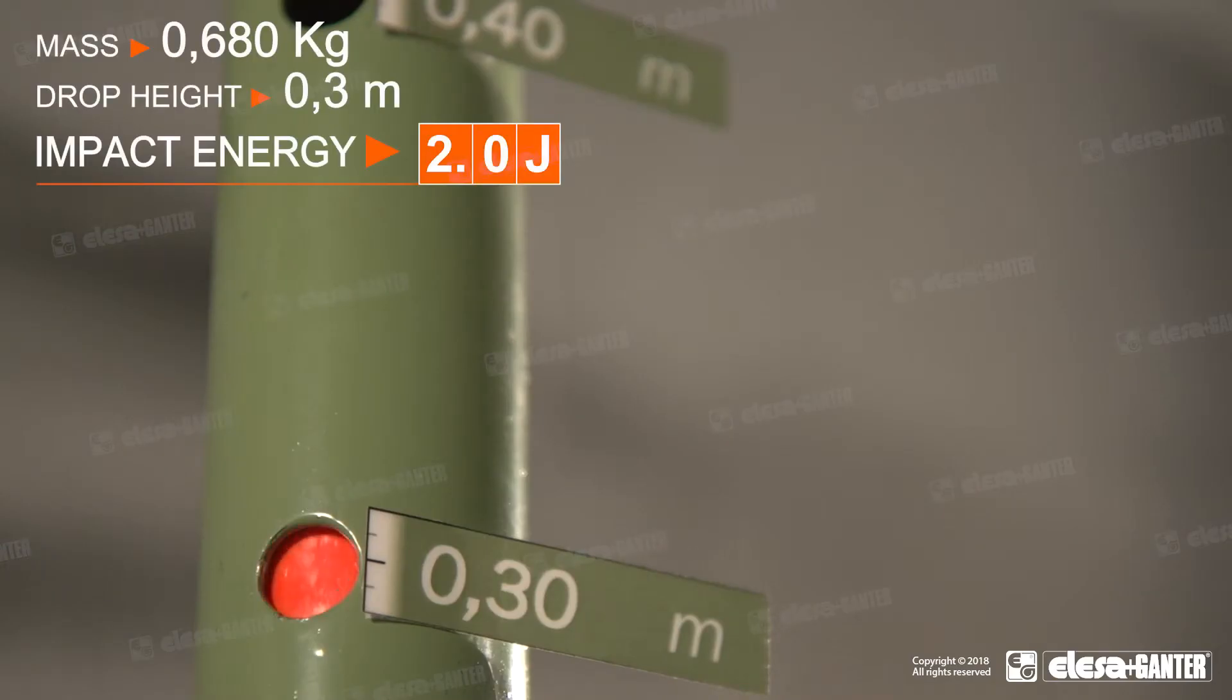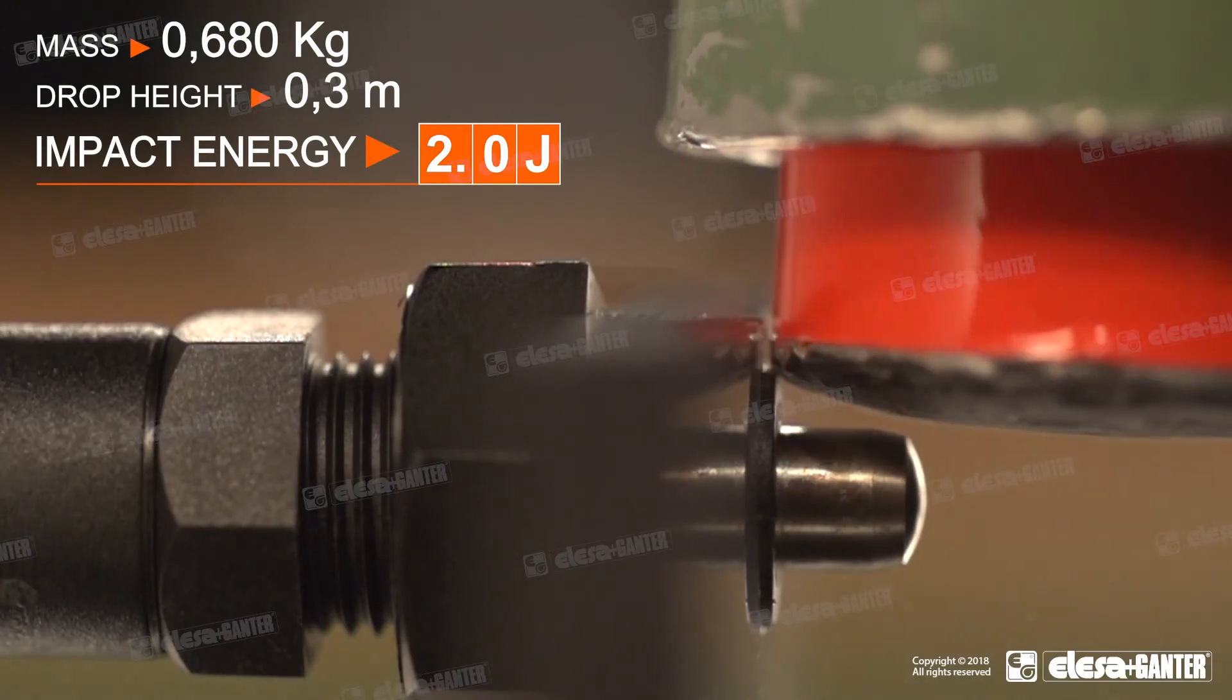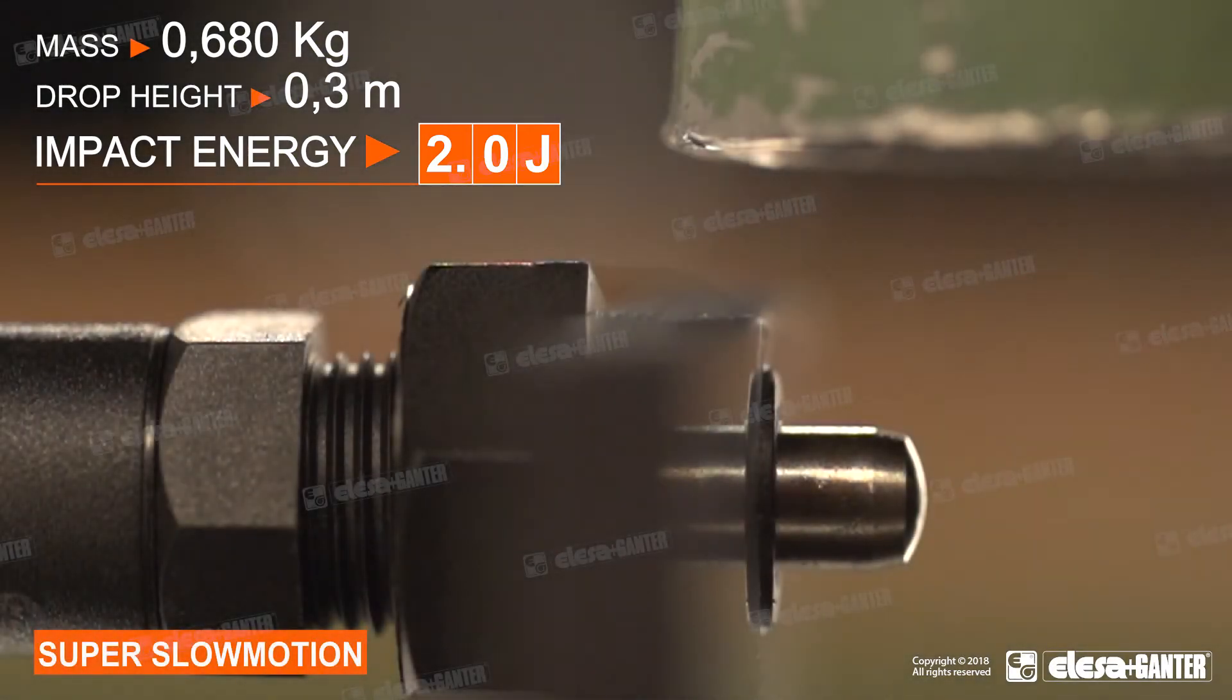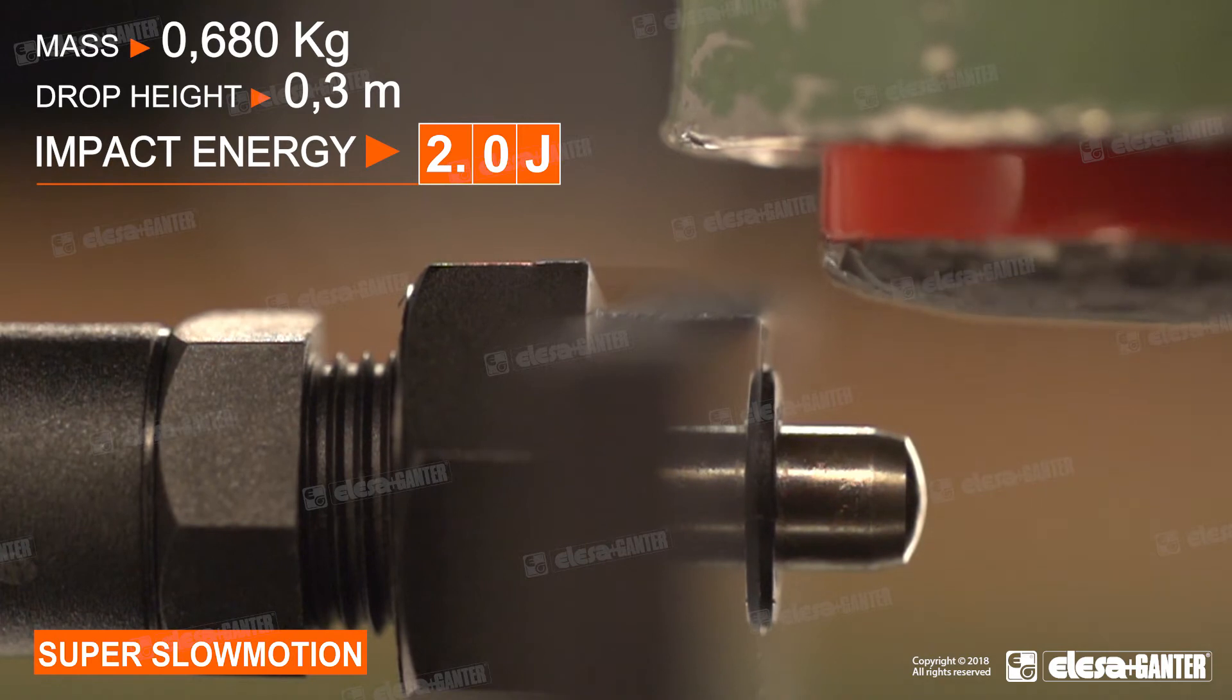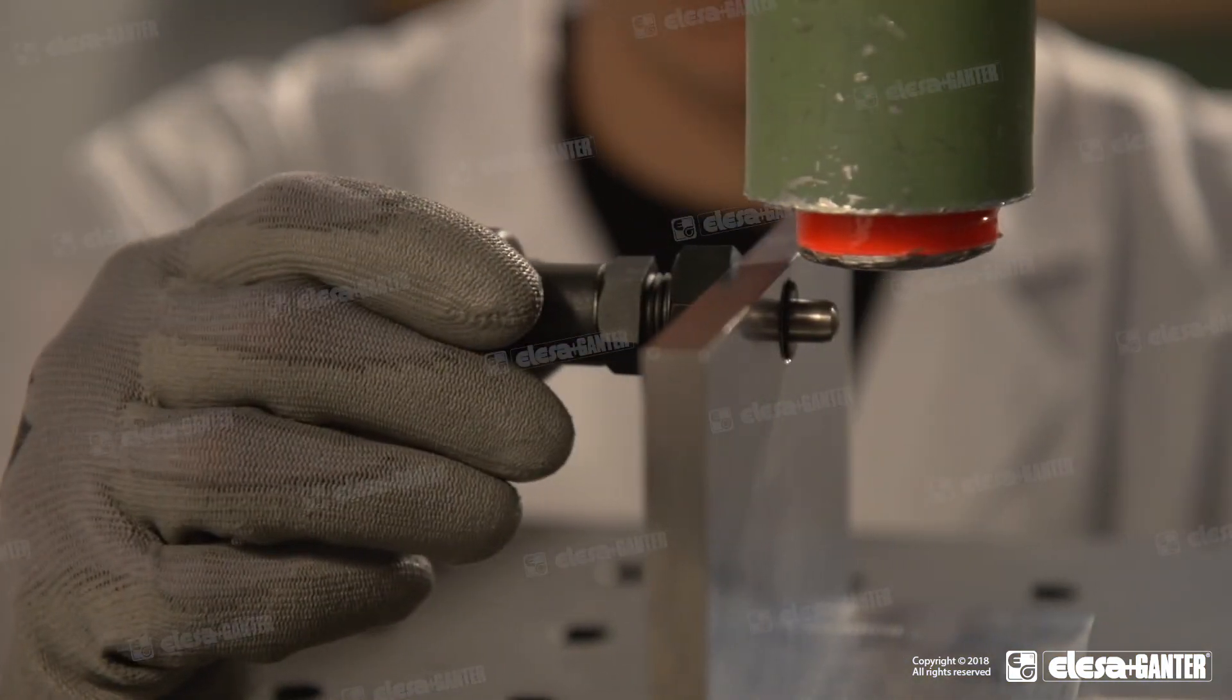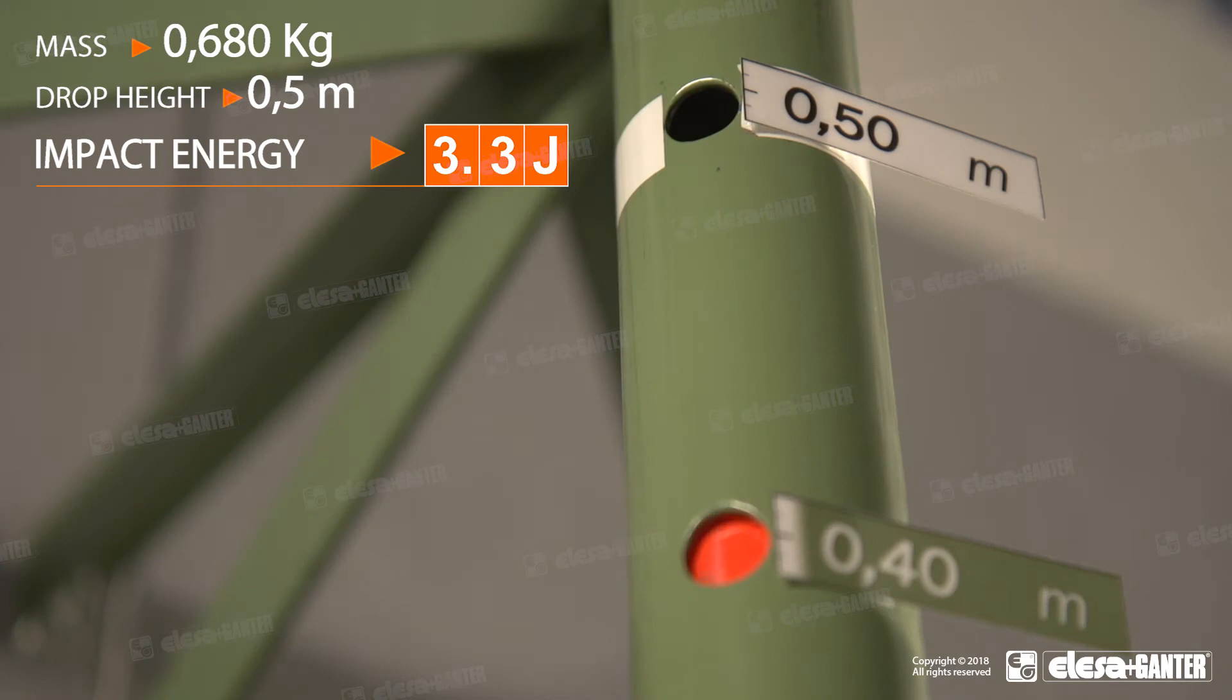The impact weight is dropped from a height of 0.3 meters. After the impact, no plunger deflection is visible and the sample is working smoothly. The same sample is therefore suitable for undergoing further impacts.